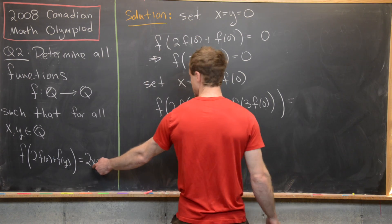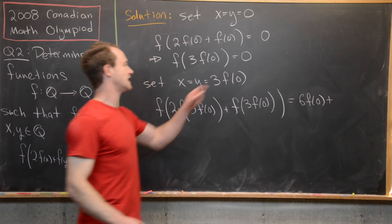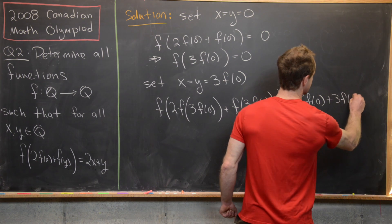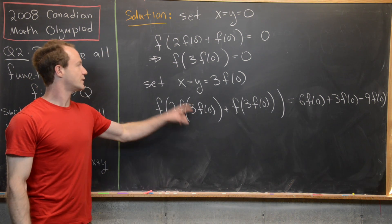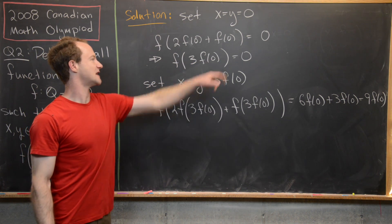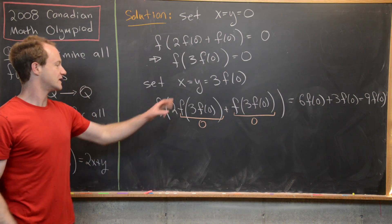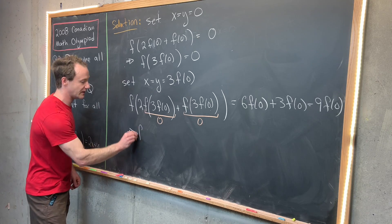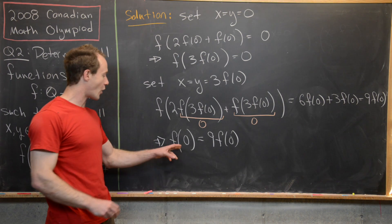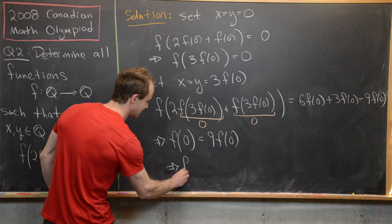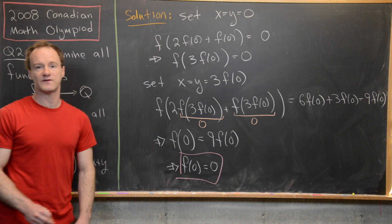On the right-hand side, we get two times x, but x is three times f of zero, giving us six f of zero, plus y which is three f of zero, so we get nine times f of zero. Now we know that f evaluated at three f of zero equals zero, so both terms inside the function collapse to zero, giving us f of zero equals nine times f of zero. The only number that is nine times itself is zero, so that tells us immediately that f of zero equals zero. This is a really important fact.